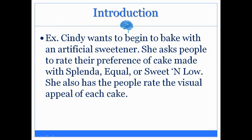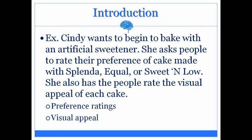Just like the first couple of lectures, there are two dependent variables here. The two dependent variables include the preference ratings — that would be their taste, the appreciation they have for the taste of the food — versus the visual appeal, which is how the cake actually looks. Those two things are two separate variables: one is on taste, one is on visual appeal. Both are very important to a chef. Those two factors she measured are the two dependent variables here.